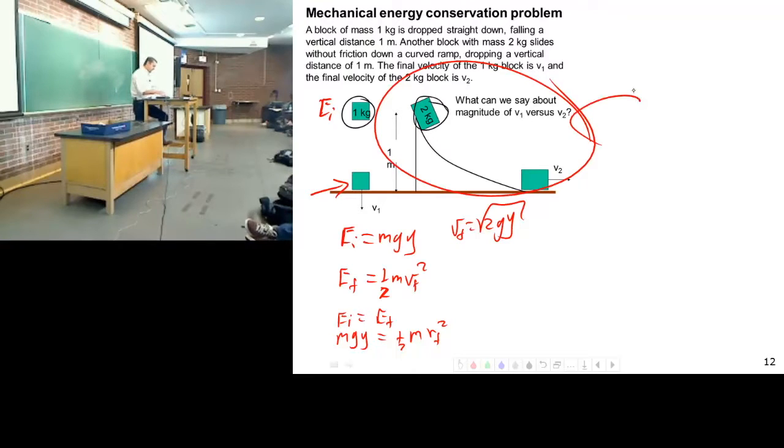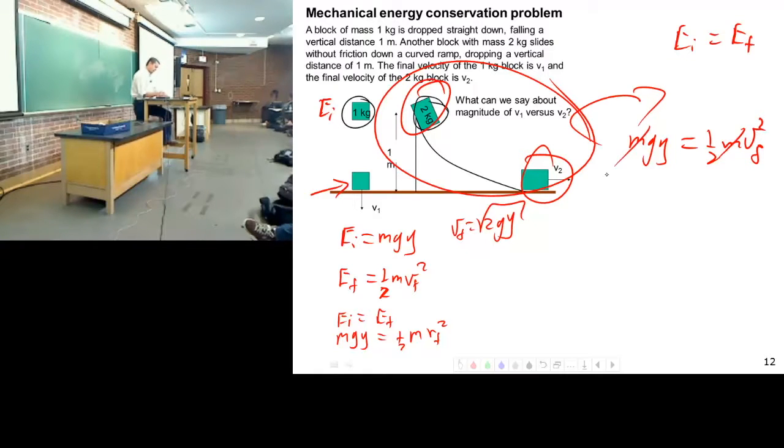If I look at this situation, it's the exact same situation. Initial state, it's just Mgy. Final state, one half Mv final squared. M goes away again. V final is going to be square root of 2gy.